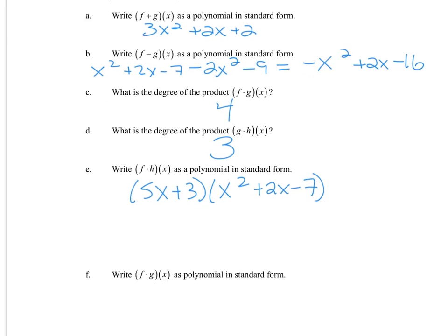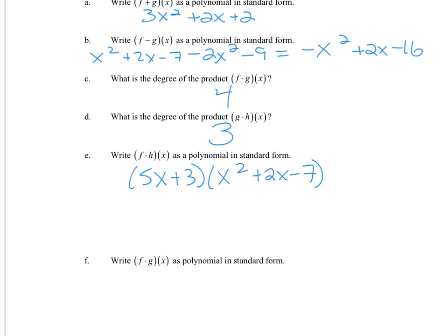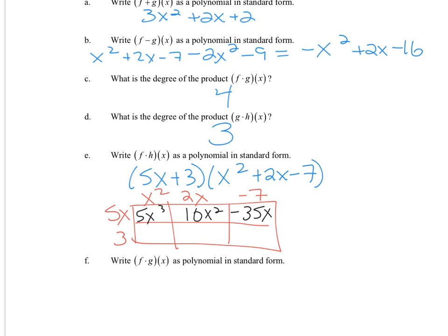Let's multiply f and h. You can distribute. If you want to stay organized, you can use a box. I'll use the box method. This is 5x³, 10x², -35x, multiplying 5x times x², 5x times 2x, 5x times -7. You would get the same thing if you distributed. Now for my bottom row, that's 3x², 6x, and -21. I can see my like terms here. So we have 5x³ + 13x² - 29x - 21.